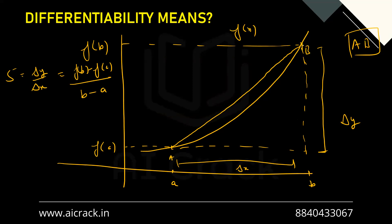Now, what if we take point B closer towards A? As B approaches A, the secant becomes closer to the tangent at point A. We can keep B at a point where the distance between A and B is infinitesimally small, but they cannot actually merge. So we use the limit concept to find the slope at point A — finding the limiting value of what the slope would be if they had merged. That's why we studied limits before differentiability.